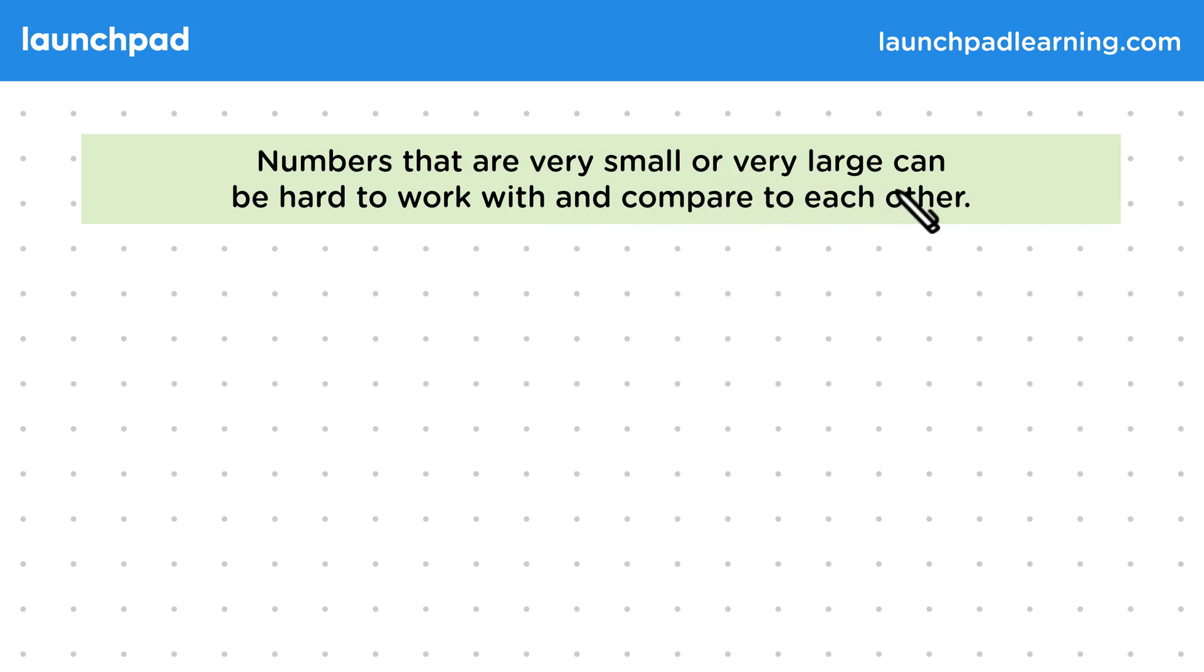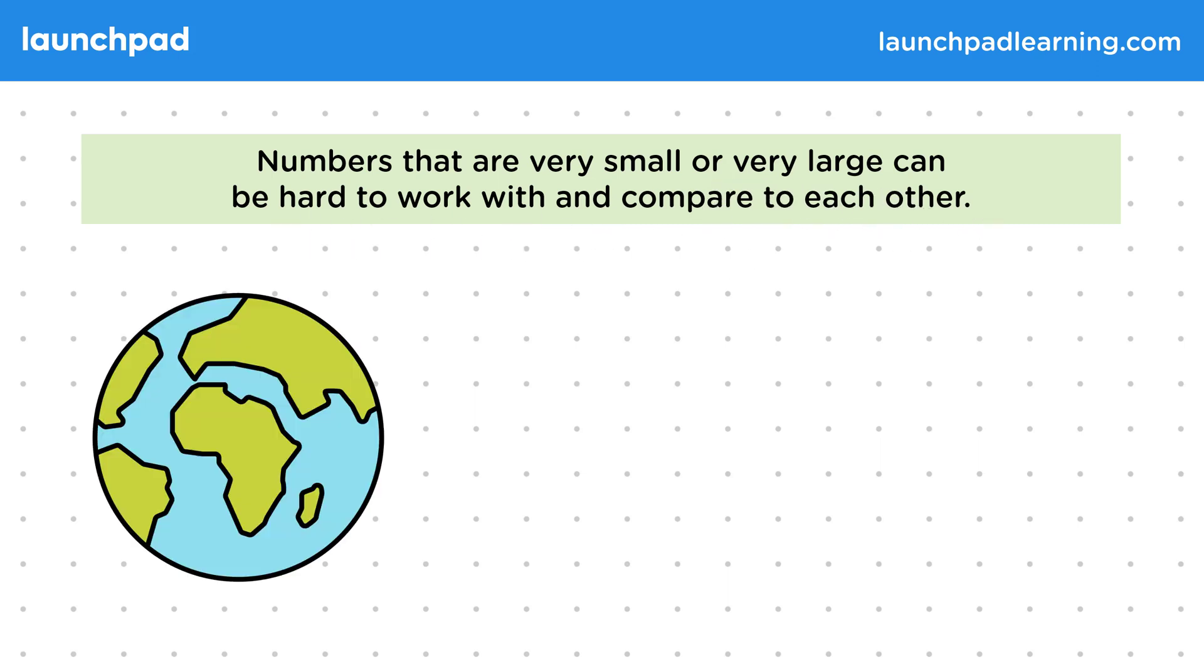Numbers that are very small or very large can be hard to work with and compare to each other. For example, the Earth's diameter rounded up to the nearest 1000 is 13,000 kilometers.